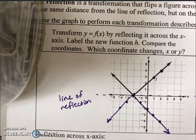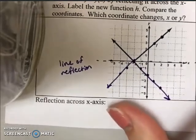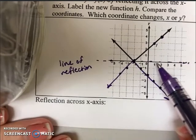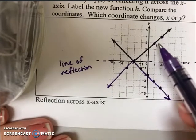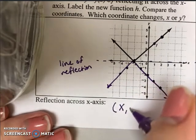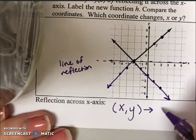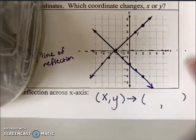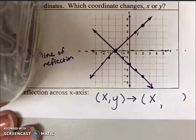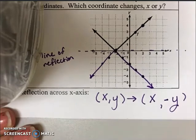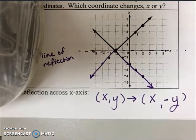It turns out there's a rule we can write as well. You may have noticed every time I was doing reflection, the X value stayed the same—it was the Y values that were changing. From our original point (x, y), we get our new points by letting X remain the same and we negate the Y. So (x, y) → (x, -y). Negating is what makes it opposite of the original Y value.